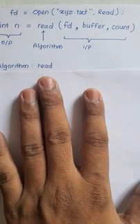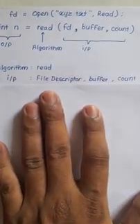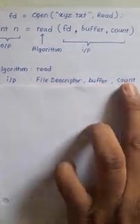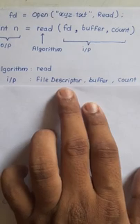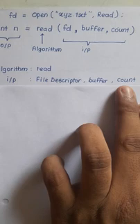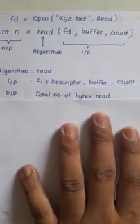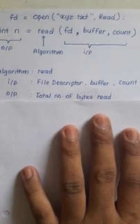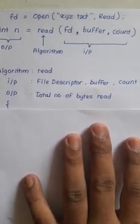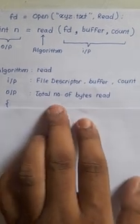The algorithm read takes as input: file descriptor, buffer, and count. We have already discussed the details about buffer and count in an earlier video. The output has also been discussed. Now when we begin this algorithm, we need to think about what we are actually doing.